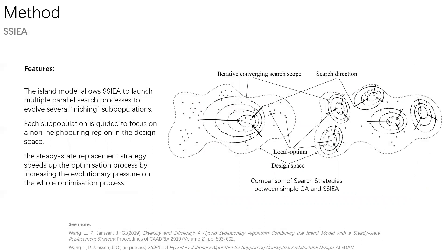The second component is the hybrid evolutionary algorithm, which we call SSIEA. The main feature of SSIEA is that we implement an island-based model in this algorithm. So during the optimization process, SSIEA can focus on several regions in the design search space and output several high-performing design variants with relatively high design differentiation. In contrast, if we use a standard genetic algorithm, the optimization process usually converges into a very limited region in the design search space and outputs a group of very similar design solutions. Since there is no differentiation among these solutions, the designer cannot extract more information about the design problem from the optimization result.